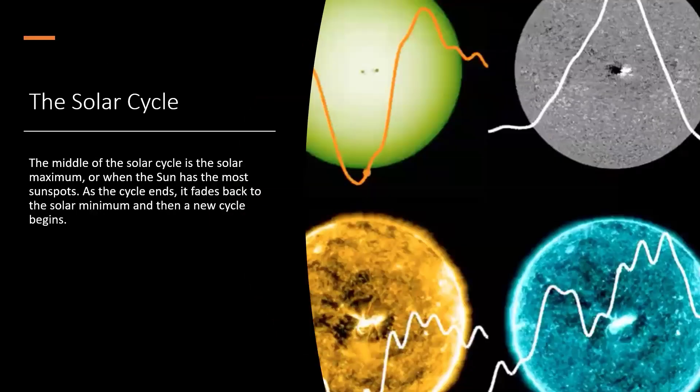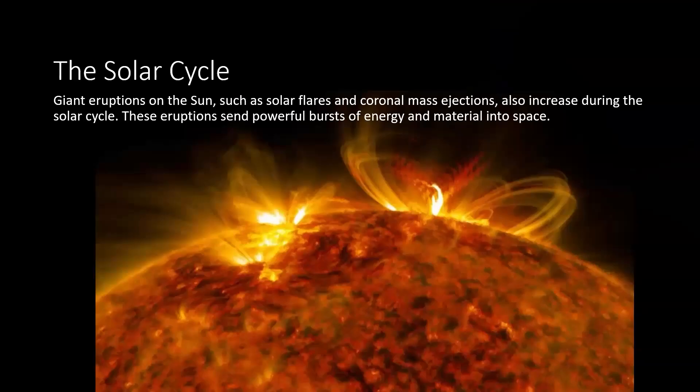The middle of the solar cycle is the solar maximum, or when the sun has the most sunspots. As the cycle ends, it fades down, back down to the solar minimum, and then a new cycle begins. So this whole thing is a cyclic activity, and the sun goes through this all the time. Giant eruptions on the sun, such as solar flares and coronal mass ejections, also increase during the solar cycle. These eruptions send powerful bursts of energy and material into space. I think we're right now, if I remember correctly, we are now reaching the maximum, so we're in the middle of the cycle.